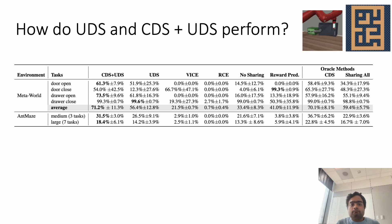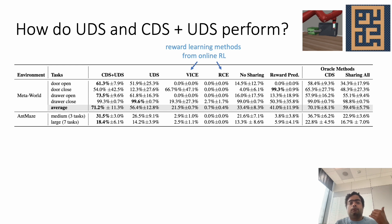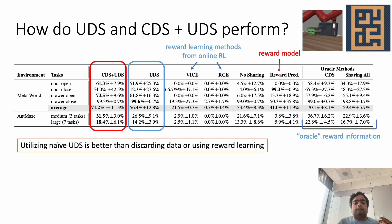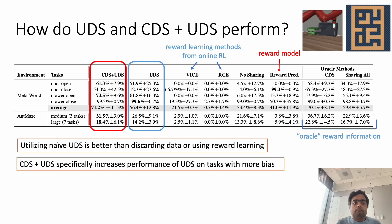Let's move to some empirical results. In the first set of experiments, we compare the performance of UDS and CDS+UDS on two robotic manipulation and navigation tasks in a multitask setting. We compare to reward learning methods from online RL — WISE and RCE — the reward prediction method discussed earlier, multitask RL methods with Oracle reward information, and no sharing which discards all unlabeled data. Notably, even the naive UDS approach is quite a few times better than simply discarding all unlabeled data or utilizing reward prediction. CDS+UDS specifically increases performance on tasks with more reward bias, which is quite encouraging.